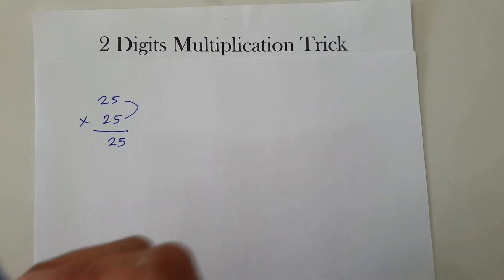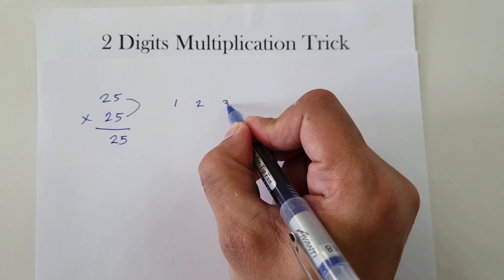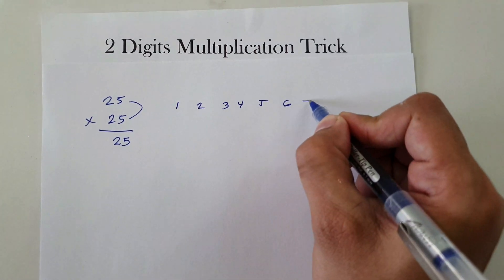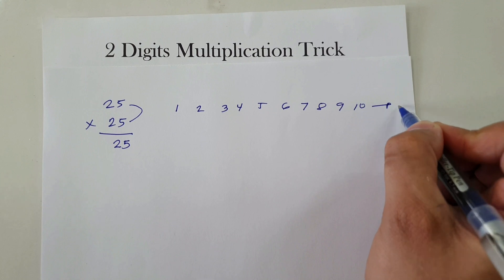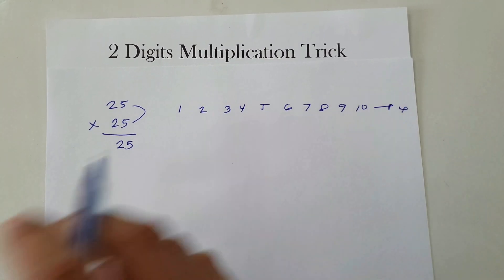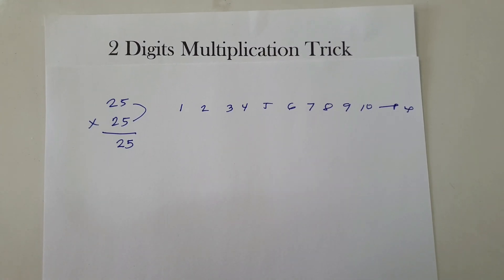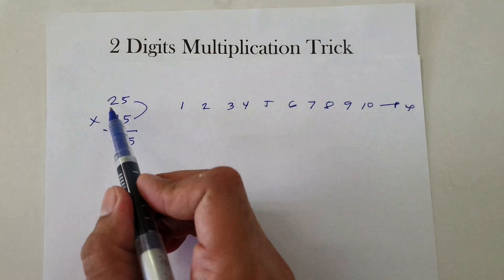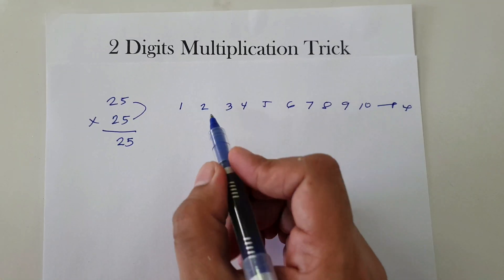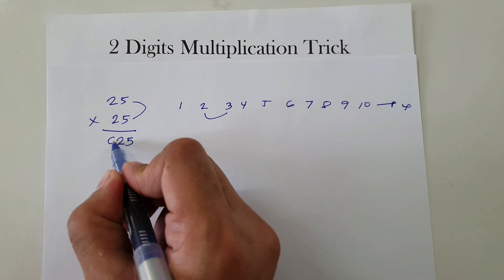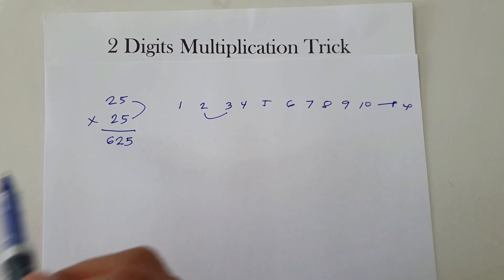Now, in counting numbers we have 1, 2, 3, 4, 5, 6, 7, 8, 9, 10, and so on to infinity. The next step is we multiply the tens digit — in this case 2 — by the next counting number after it, which is 3. So 2 times 3 is 6. Therefore 25 times 25 is 625.